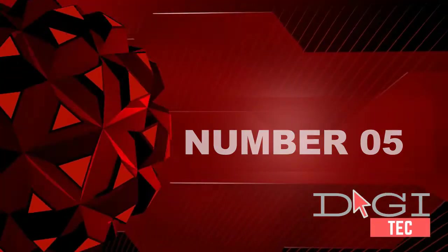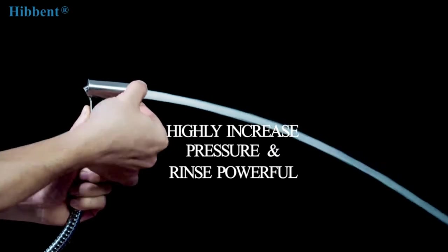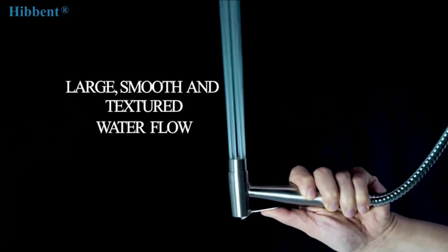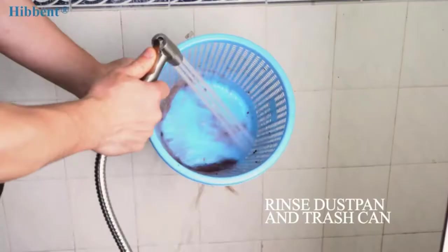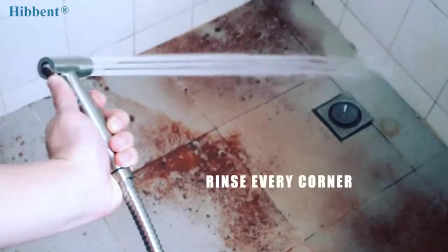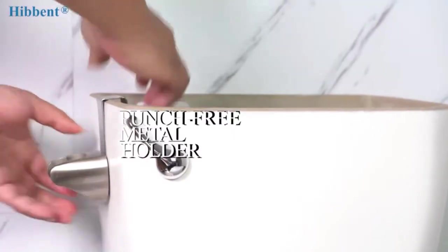Number five: bidet sprayer, dual function with a twist to water flow, bubble stream and strong sprayer jet, high water pressure. The handle can be pushed up for always open. Includes all the components you need to use it as